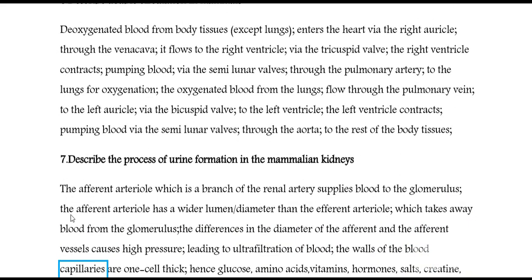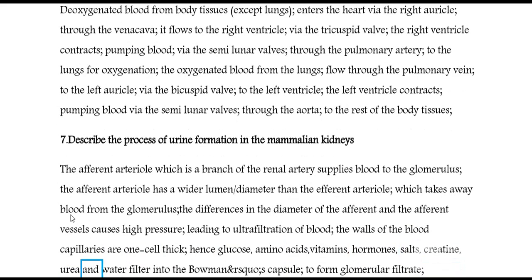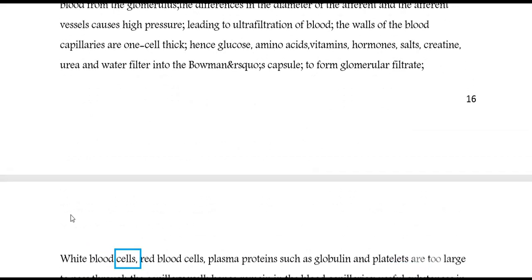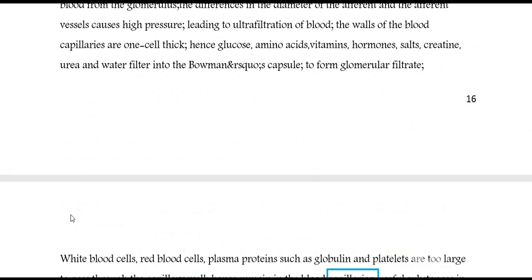The walls of the blood capillaries are one cell thick; hence glucose, amino acids, vitamins, hormones, salts, creatine, urea, and water filter into the Bowman's capsule to form glomerular filtrate. White blood cells, red blood cells, and plasma proteins such as globulin and platelets are too large to pass through the capillary wall, and hence remain in the blood capillaries.